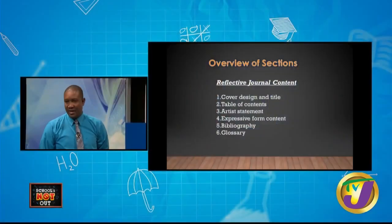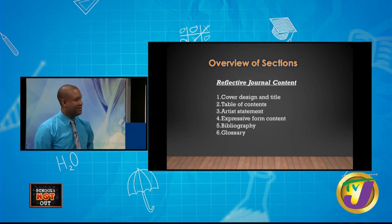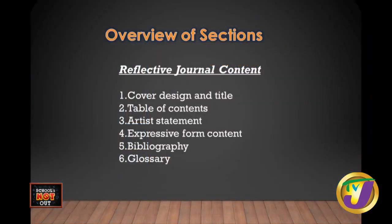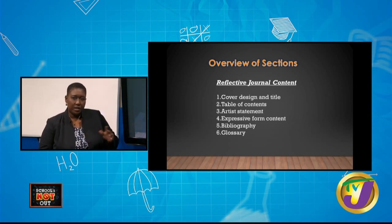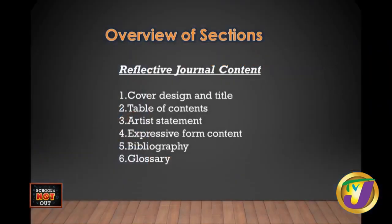Today we're looking at an overview of content that will be explored in the Reflective Journal. The reflective journal content includes: cover design and title, table of contents, artistic statement, expressive form, bibliography, and glossary — which we call the definition of terms. The expressive form content includes drawing, painting and mixed media, graphic design communication, printmaking, 3D, textile, and so on — any two expressive forms you have chosen to do for CSEC Visual Arts.